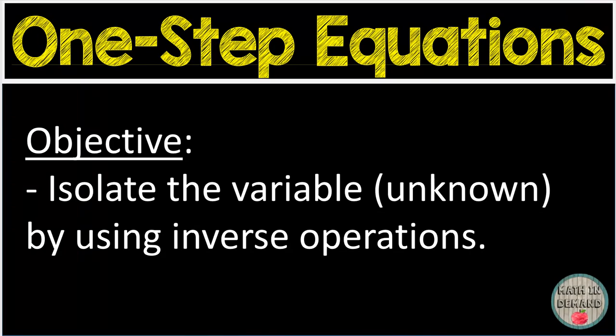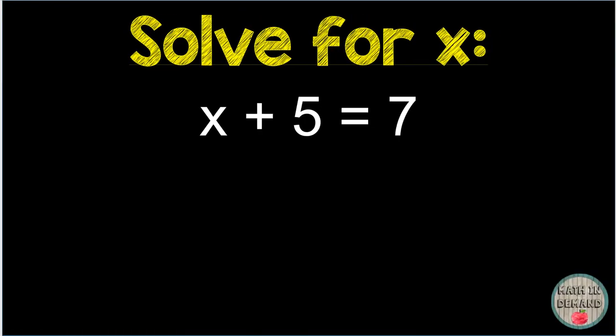Let's take a look at our first problem. My first problem states x plus 5 equals 7. Again, my objective, which is my goal, is to isolate my variable. In order to isolate my variable, I am going to use inverse operations to get rid of the positive 5. In other words, I am going to do the opposite of adding 5. The opposite of adding 5 is subtracting 5.